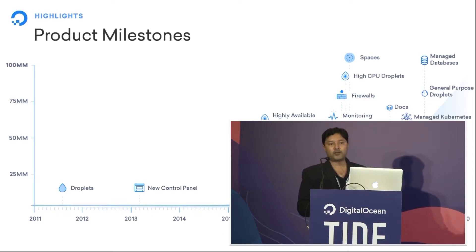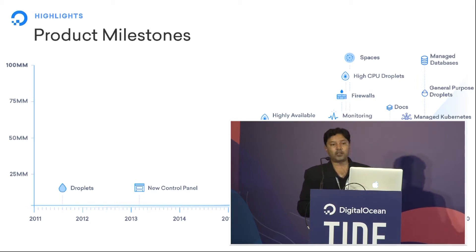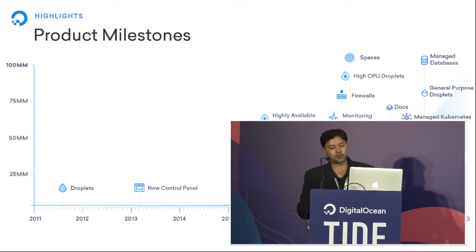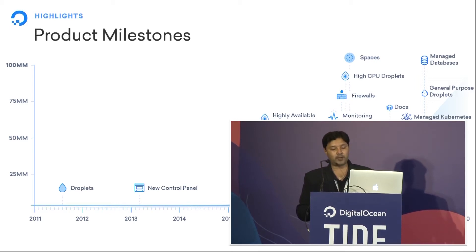Before we start, this is just the roadmap of how services and products on the DigitalOcean platform have evolved over a couple of years. We basically started in mid-2011 with something called Droplets, which is an equivalent of your virtual machines. And if you see the traction since 2015, we have added a couple of products in the pipeline.